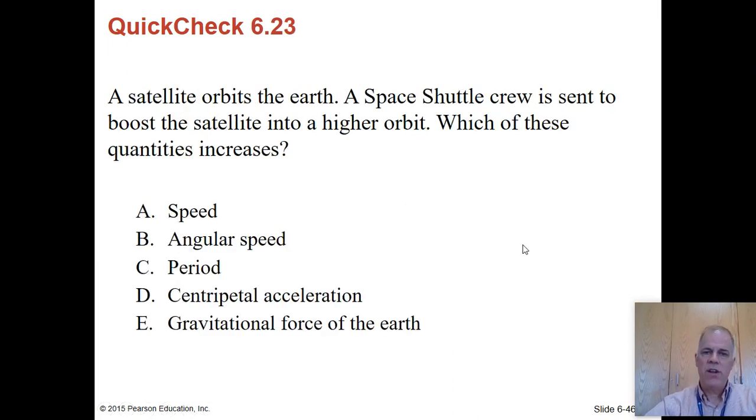Finally, satellite orbits the Earth. If a space shuttle crew is sent to boost the satellite to a higher orbit, which quantity increases? And here is the answer. The answer is the period. And you may not be familiar with this term. It did show up once, but we kind of went over it kind of quickly. Period is how long it takes to go around. It's just going to take more time to complete an orbit when it's higher up.